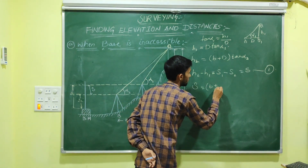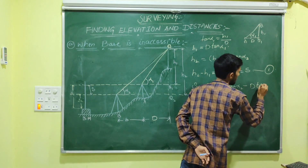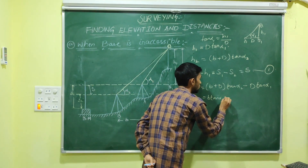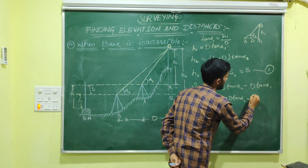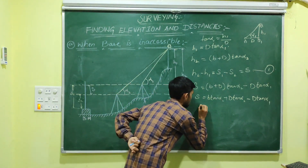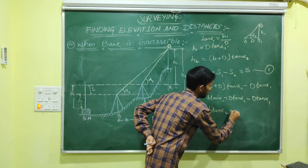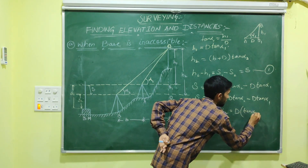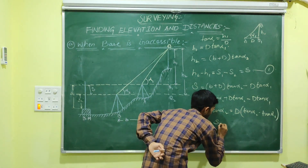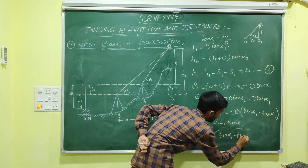Substituting H2 equals (small b + D)·tan(alpha 2), and H1 equals D·tan(alpha 1), then H1 minus H2 equals S. Opening the bracket: D·tan(alpha 1) minus b·tan(alpha 2) minus D·tan(alpha 2) equals S. Rearranging: D equals S minus b·tan(alpha 2), divided by tan(alpha 2) minus tan(alpha 1).